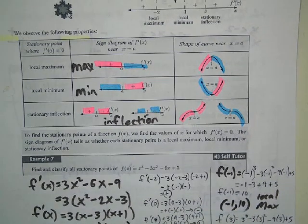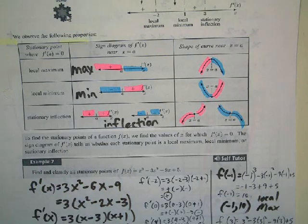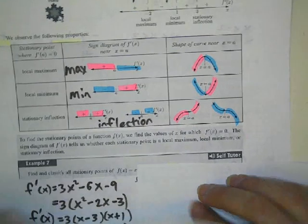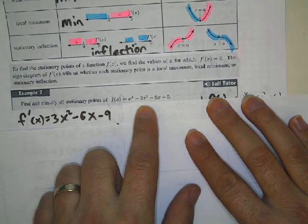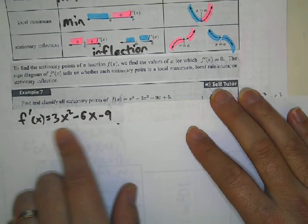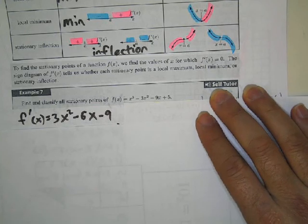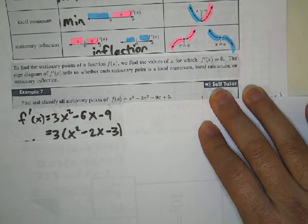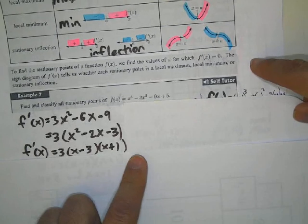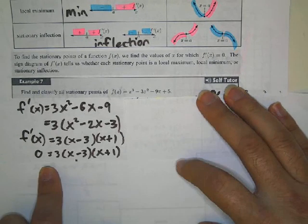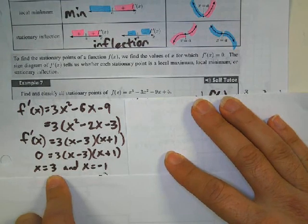Let's talk about example 7: find and classify all the stationary points. To find stationary points, we find the derivative, and when the derivative equals 0 that's when we know we have a stationary point — either a maximum, minimum, or inflection point. First, factor out a 3. Then ask what two things multiply to give 3 and subtract to give 2 — it's (x minus 3)(x plus 1). So the stationary points are when x equals 3 and when x equals negative 1.